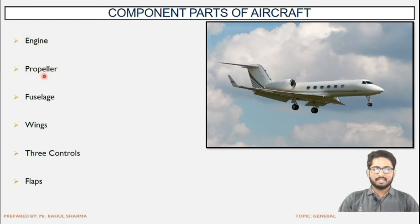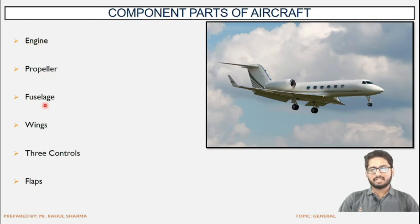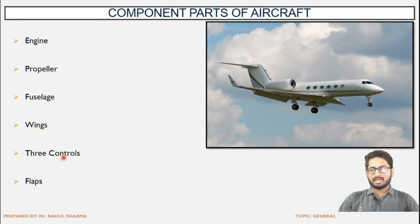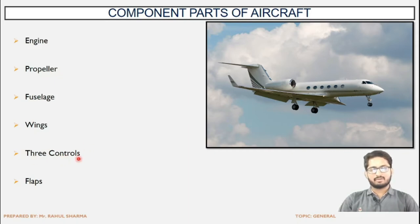The propeller propels and moves the aircraft ahead; the power is derived from the engine. Fuselage is the body of the aircraft. Wings are for the lift. Three controls are basically for the control of the aircraft in three directions: vertical direction, horizontal direction, and sideways movement. We will be seeing which components are used for these three controls, and flaps as well.